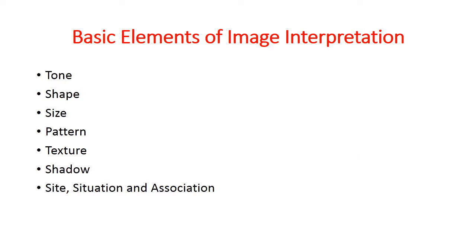Recognizing targets is the key to interpretation and information extraction. These are some basic elements of image interpretation which are used for identifying the targets: tone (the color of an object), shape, size, pattern or texture, shadows, and interpretation based on site, situation, and association.